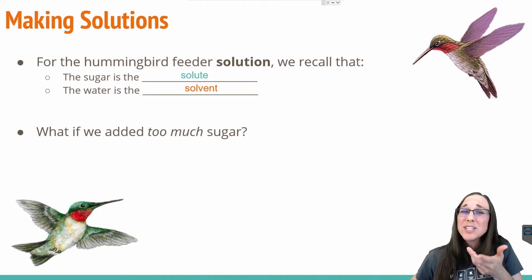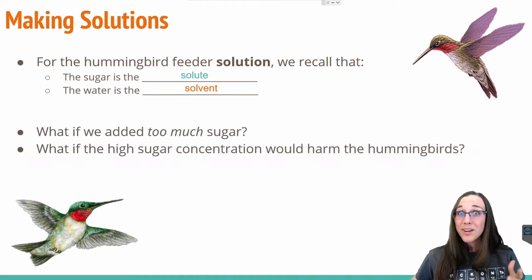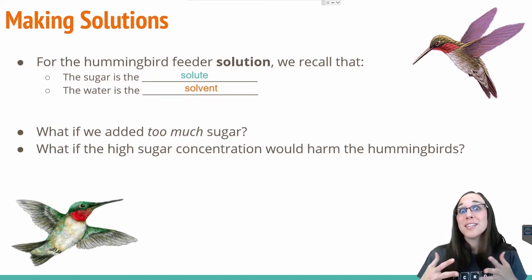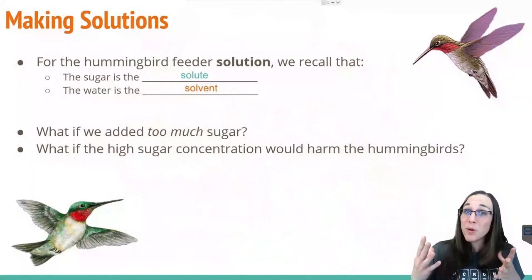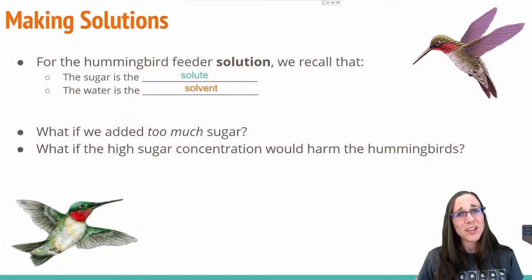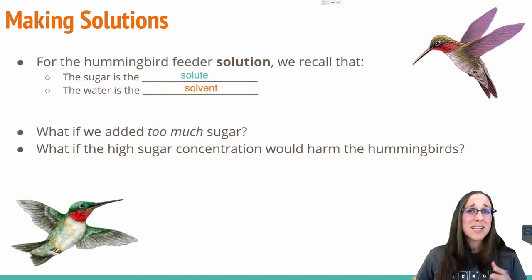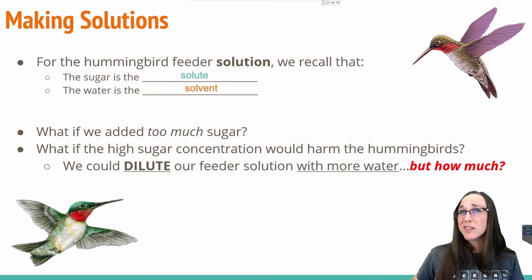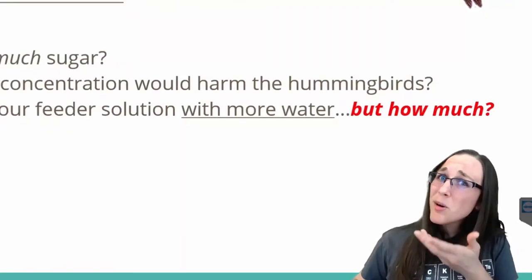But what if we added too much sugar? What if that much sugar, that high concentration, would literally cause the hummingbird's little hearts to beat so fast they would just explode into a ball of feathers? Well, that would be horrible. So we don't want to harm the hummingbirds, we're trying to feed them. So instead of just dumping out that whole solution you just made, why don't we just dilute it? If we add more water to this solution we've already generated, we should be able to dilute it. But how much water?